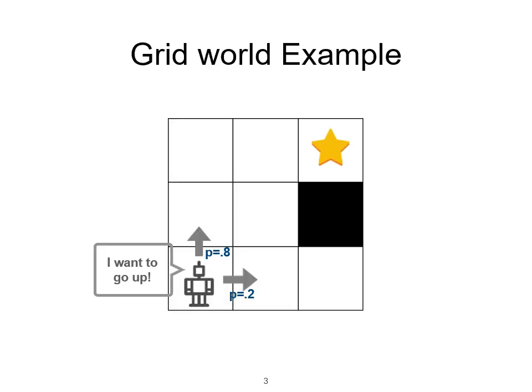For example, to illustrate this, let's consider the well-known grid world example. You have a robot that maybe wants to go from some initial state to some goal state while avoiding obstacles or unsafe regions. Now the robot can make decisions, can take actions—for example, it can decide to go up, but it will not go deterministically up.